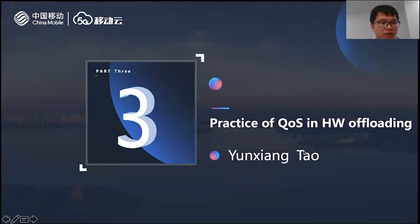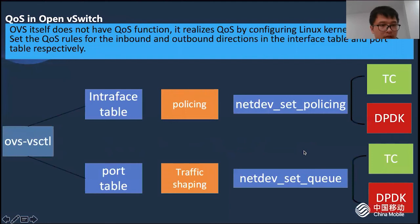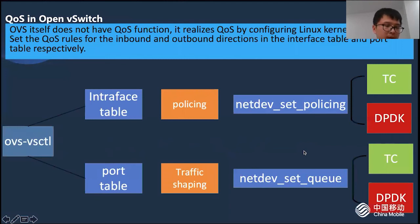Hello, I'm Yunxiang. I'm glad to share this topic here. Yajun and Rongin have talked about elastic bare metal research. I will introduce QoS practice in hardware offloading. QoS rate limiting is a commonly used function. OVS itself does not support it directly; it realizes QoS by configuring Linux TC or DPDK. That is, the QoS in OVS is implemented through the datapath. OVS implements QoS for ingress and egress through the interface table and the port table. The egress also needs to combine QoS and Queue tables to implement traffic shaping technology, realized by calling TC or DPDK through NetDev Policy and NetDev Queue. Our hardware offloading solution finally chose DPDK for this.